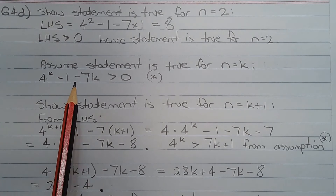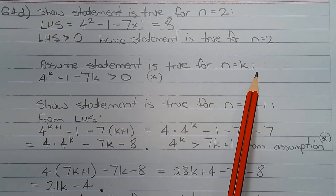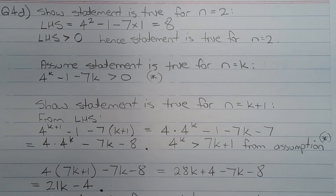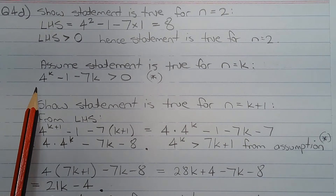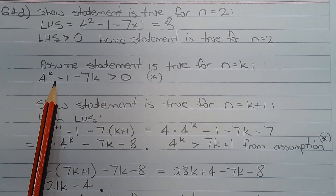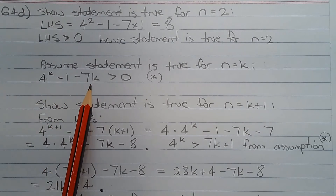Next we assume the statement is true for n equals k, that is 4 to the power of k minus 1 minus 7k is greater than 0.